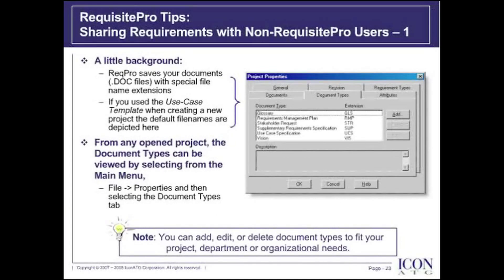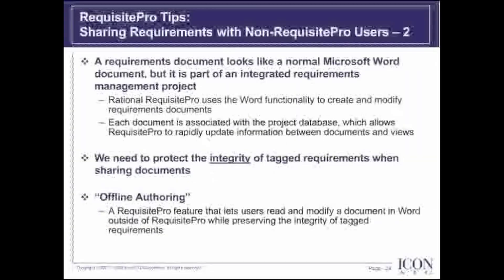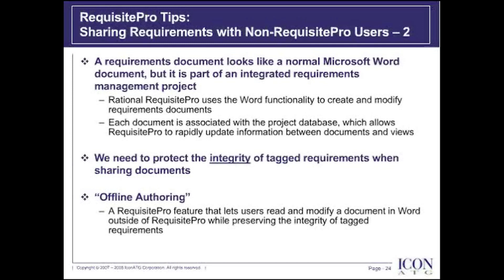We recommend that you start with the defaults and see if they'll be suitable for your project. A requirements document looks like a normal Microsoft Word document, but in reality it's part of an integrated requirements management project. Requisite Pro uses Word functionality to create and modify requirement documents, and each document is associated with a project database which allows Requisite Pro to rapidly update information between documents and requirement views.